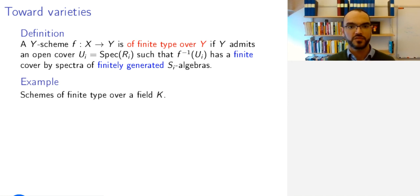One example is if we take schemes of finite type over a field K. Then, since the spectrum of K consists of only one point, the first part just goes away. And so, then we just require that this scheme has a finite open cover by spectra of finitely generated K algebras.